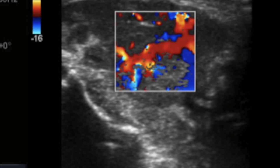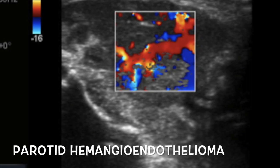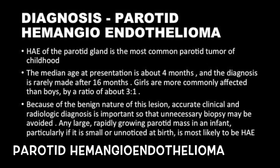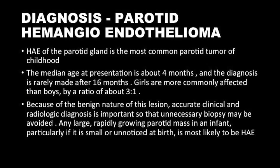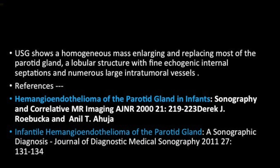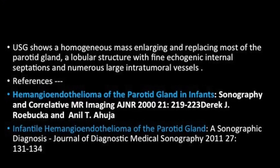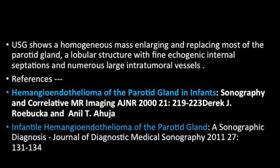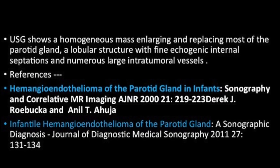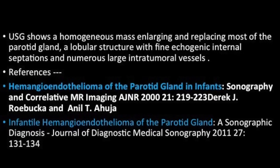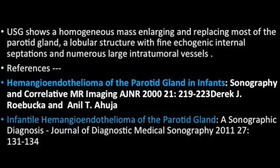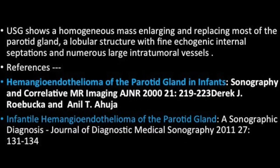Whenever you have such a history, the first diagnosis you should think of is a parotid hemangioma. It is one of the most common parotid tumors of childhood. Whenever you have a history of a rapidly growing mass in an infant in the parotid region, the first diagnosis that should come to mind is a parotid hemangioendothelioma.